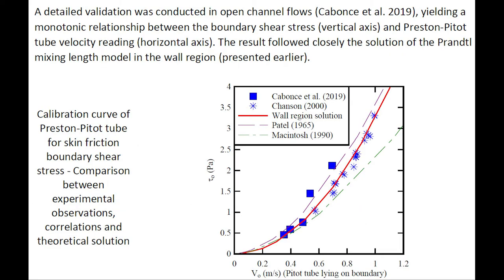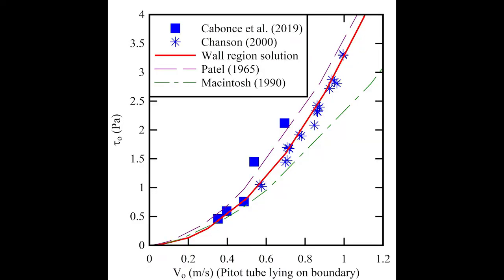A detailed validation was conducted in open channel flow, showing a monotonic relationship between the boundary shear stress and the measured velocity. The result follows closely the solution of the Prandtl mixing length model. This is illustrated on this comparison, with the theoretical solution in red solid line and the experimental data in blue symbols.